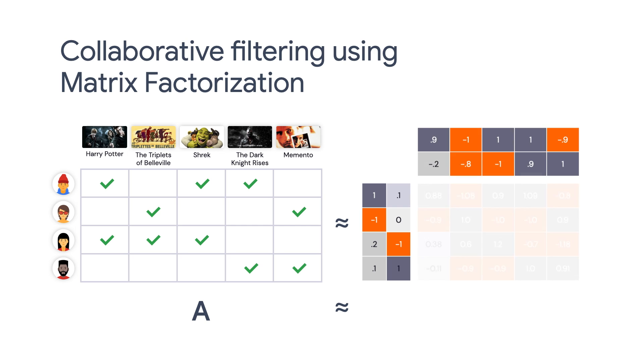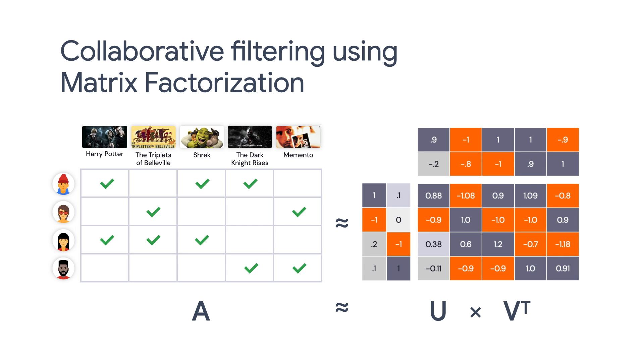For the sake of easier visualization, we are sticking to two dimensions. Here we are illustrating 2D embeddings for the users and movies on the right. Our goal is to make sure that we can learn these embeddings so that the predicted feedback matrix is as close to the ground truth feedback matrix as possible. Here we denote user embeddings as U and item embeddings as V. The product of U and V is A, which is a predicted feedback matrix. For example, if we take the first row of U, 1, 0.1, and the first column of V, 0.9, 0.2, and compute the dot product, it gives 0.88, which is the top leftmost element in the predicted feedback matrix.